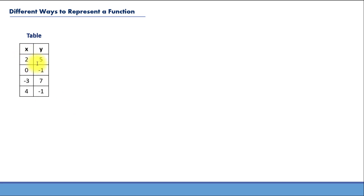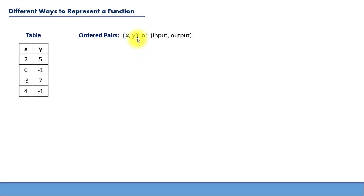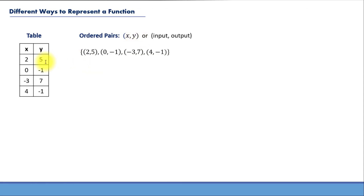For example, for input 2, the corresponding output is going to be 5. For input 0, the corresponding output is negative 1, and so on. A function can also be represented using ordered pairs, where each pair of numbers represents an input and the corresponding output. We always preserve this order: x value in the first place and y value in the second place. So input 2 and output 5 is written as the ordered pair (2, 5); next one is (0, -1), and so on.